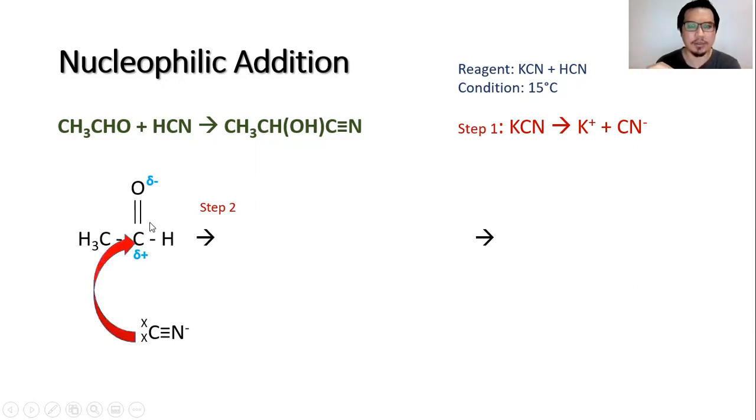This curved arrow directs the lone pair of electrons from the cyanide to the carbon delta positive. This carbon is about to form a bond with the cyanide carbon.